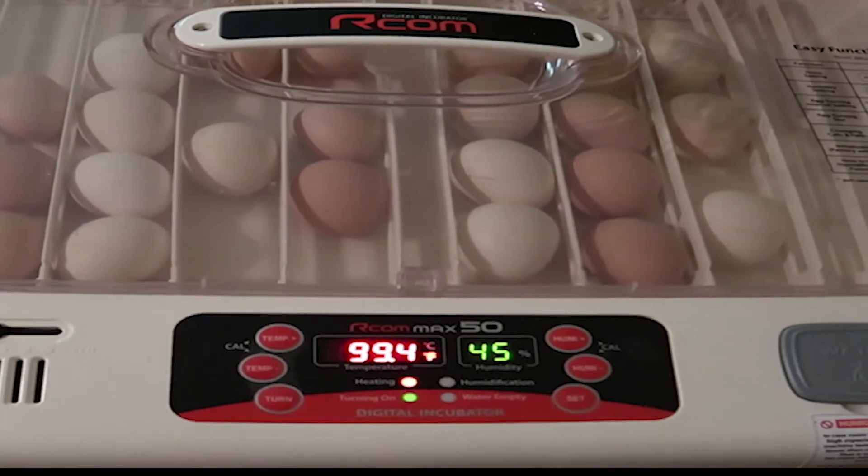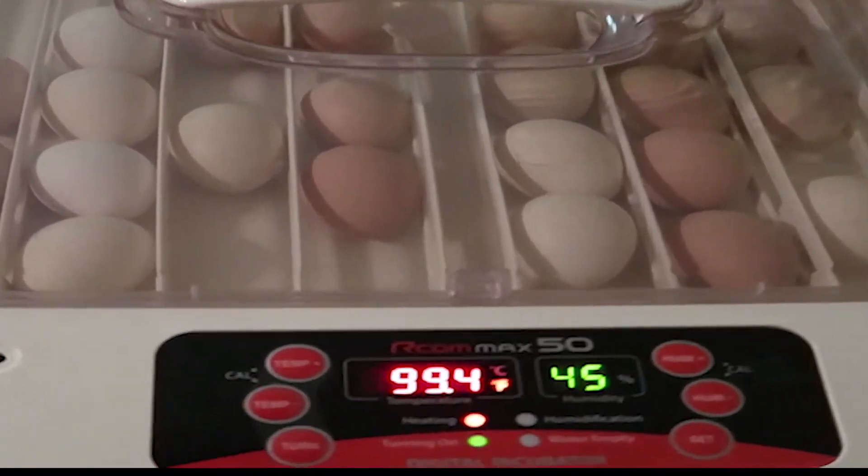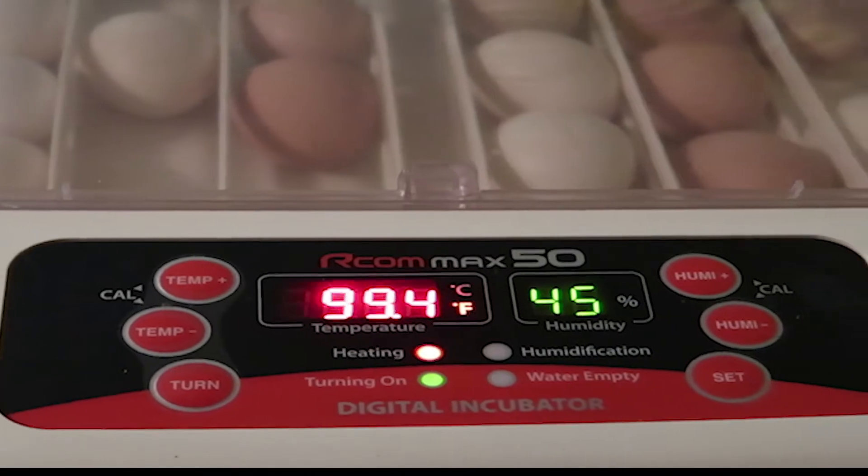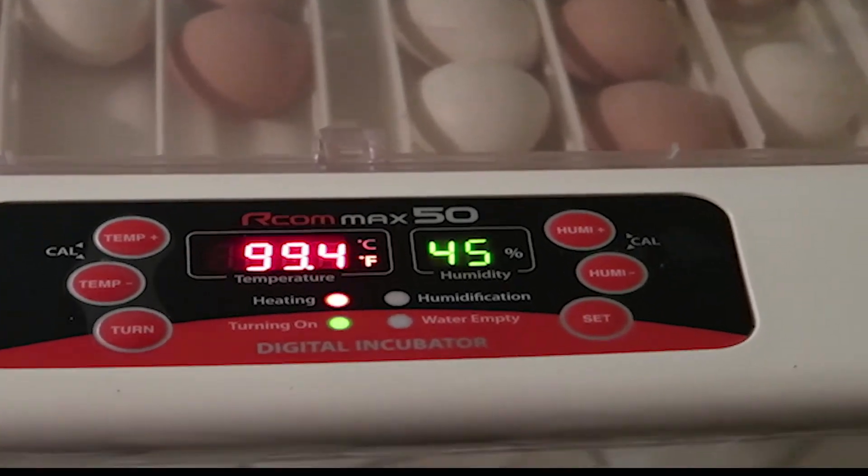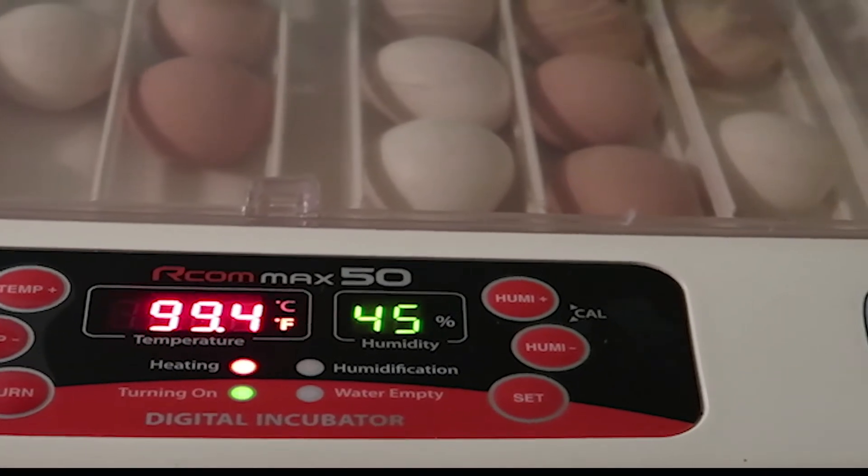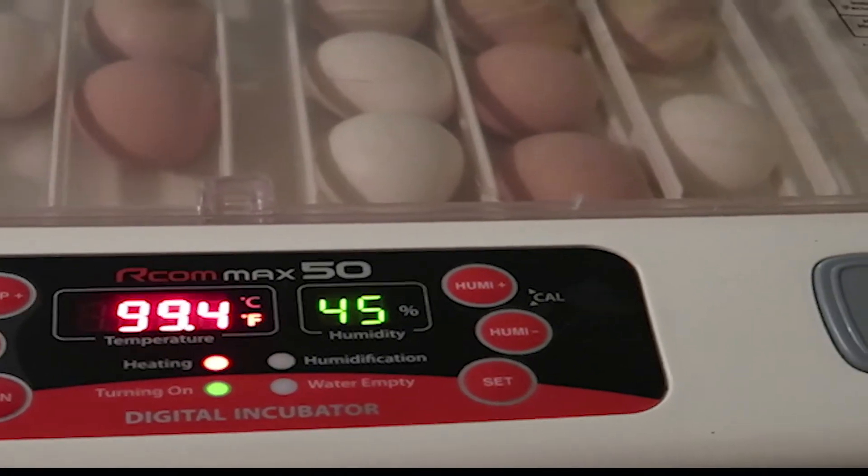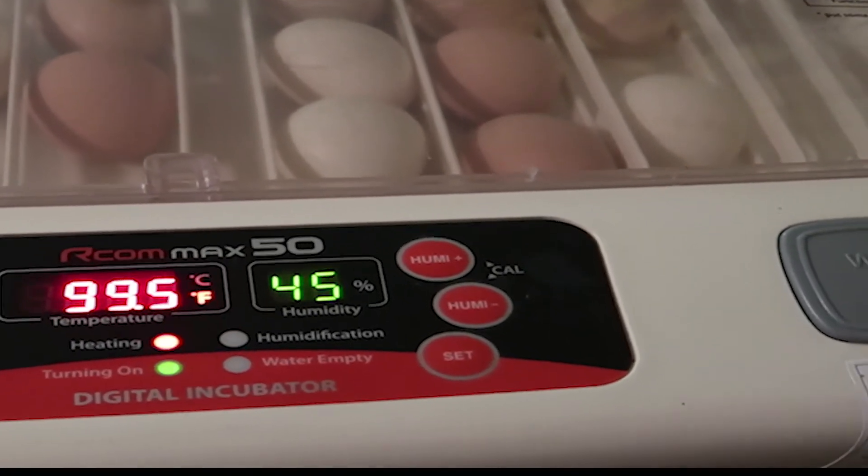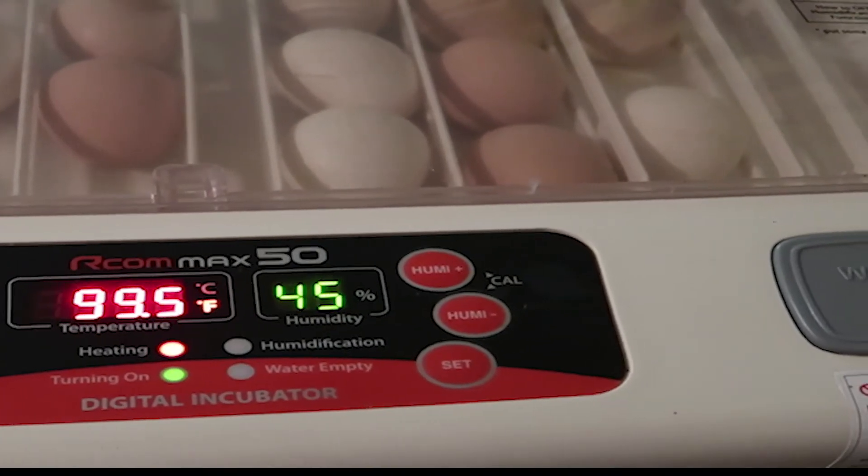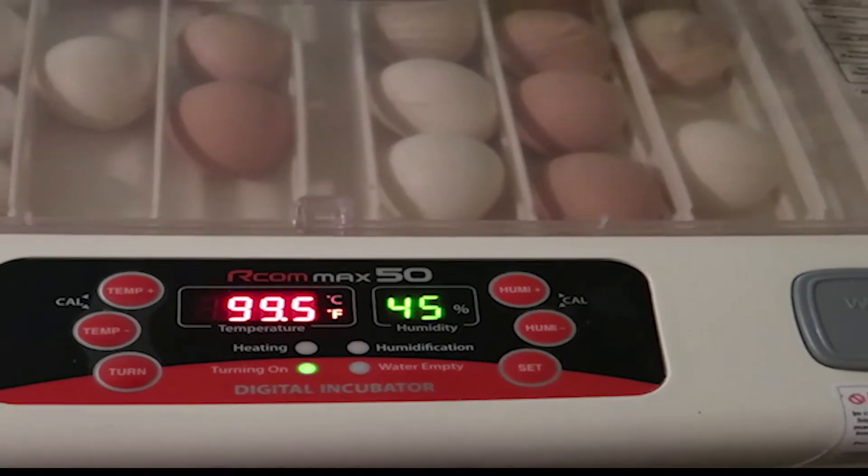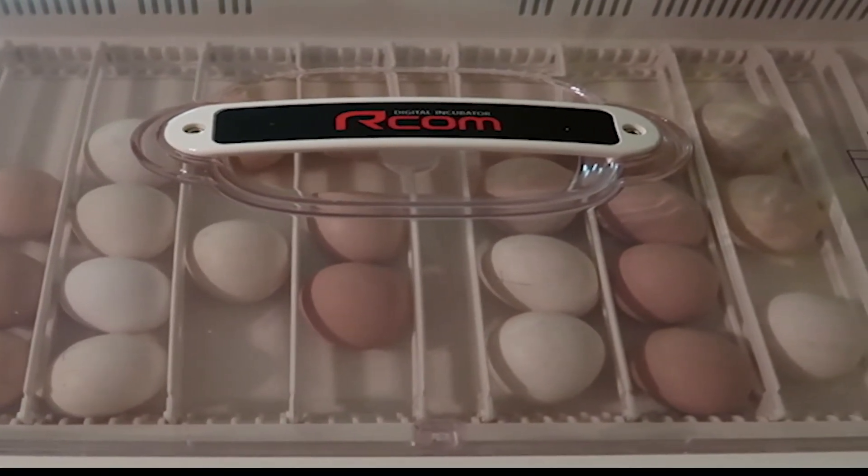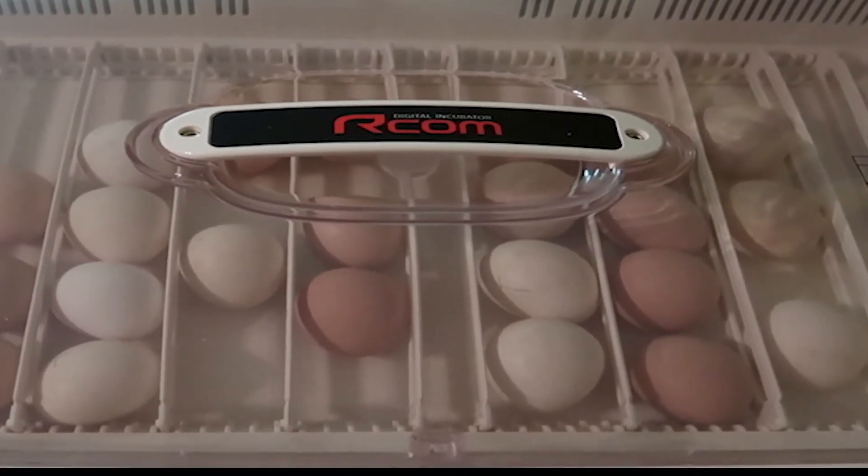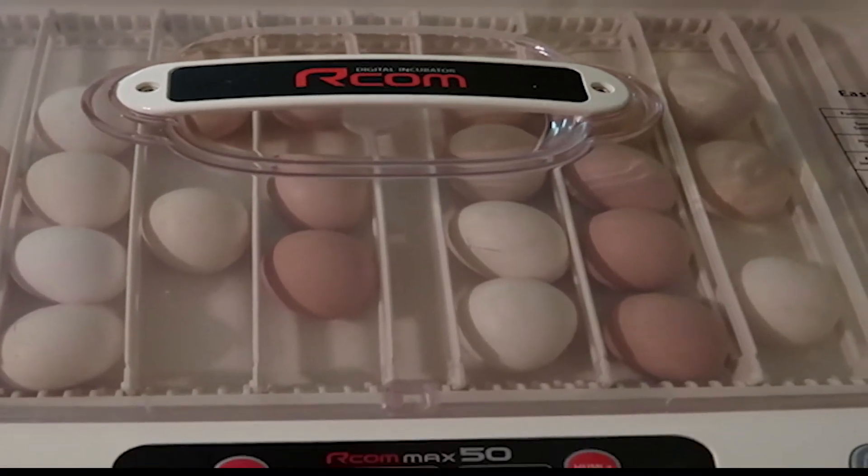We'll keep you informed of how everything goes. This thing is preset at 99.5 degrees. It's down just a bit here, but it'll come back up. Then it has a place where you put the water in, which is right here. It has to have distilled water. It does everything automatically and it's much less expensive than having one of those big cabinet incubators.